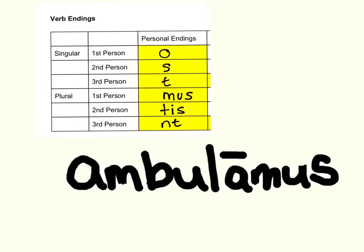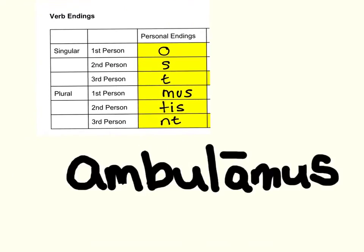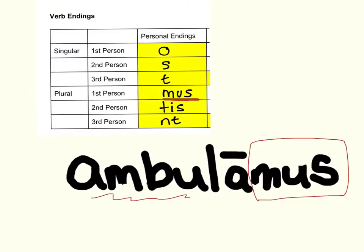We have the chart here for you, but of course you're going to work on memorizing these as soon as humanly possible. Let's take a peek at our first verb: ambulamus. First thing we're going to do is find the ending — that ending is mus. Mus, as we know, is first person plural, meaning we. Ambula is the root that means walk. So ambulamus means we walk.